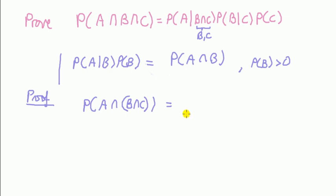Then we can just substitute this in. So we get probability of A given B and C, times probability of B and C.